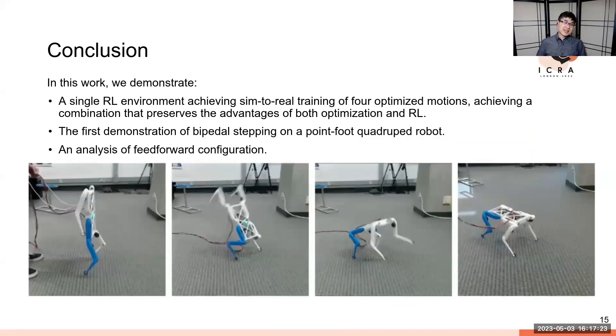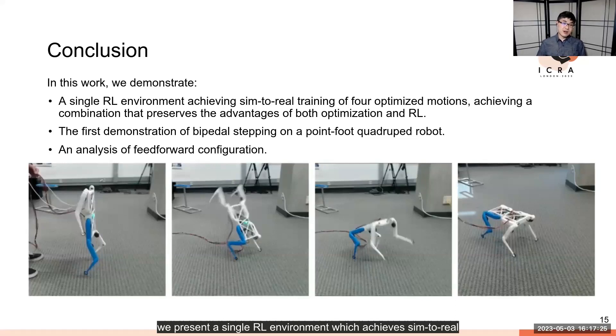In conclusion, we present a single RL environment which achieves sim-to-real imitation of four optimized motions. One of these motions is the first demonstration of bipedal stepping on a point-foot quadruped robot, as far as we are aware, and we additionally analyze feedforward configuration. Thank you very much for listening.